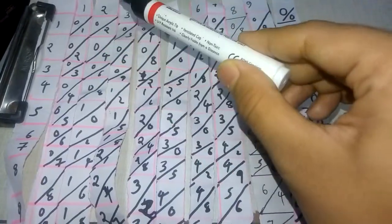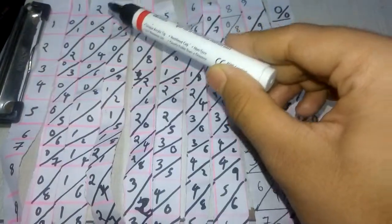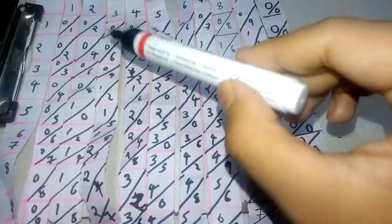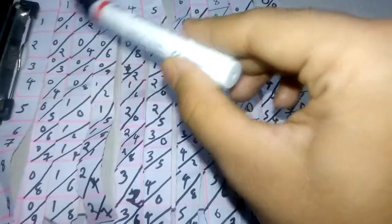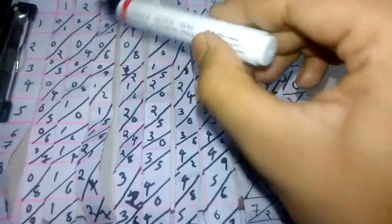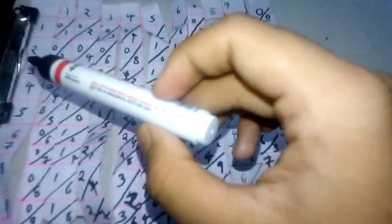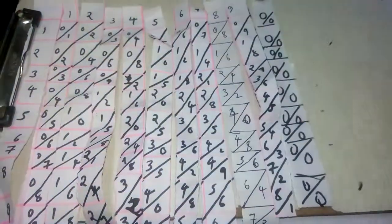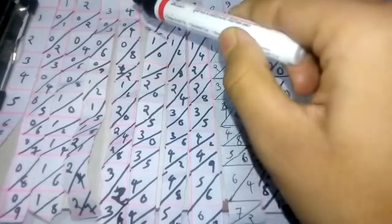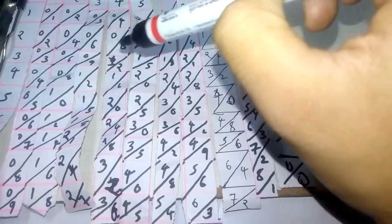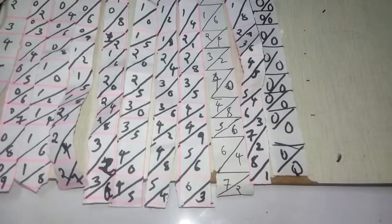Two into two is equal to four, two into three is equal to six, two into four is equal to eight. All the answers are written in this way. Three into two is equal to six, like that all are written.